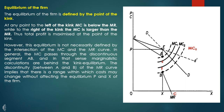For example, if the MC curve shifts — whether to MC0, MC1, or MC2 — as long as it passes through the discontinuous portion AB of the MR curve, we can still apply the MC equals MR condition. The equilibrium output remains the same, and hence the price level remains the same.